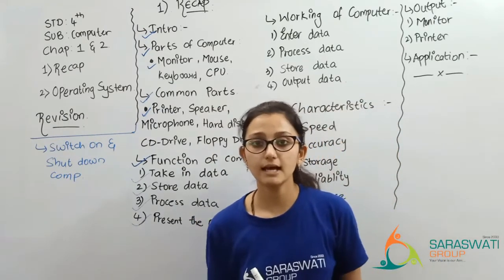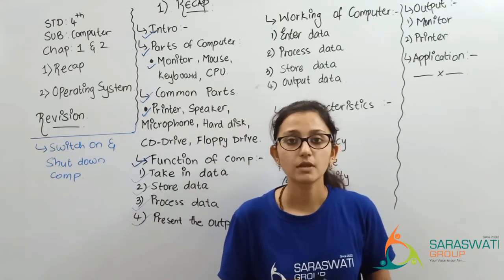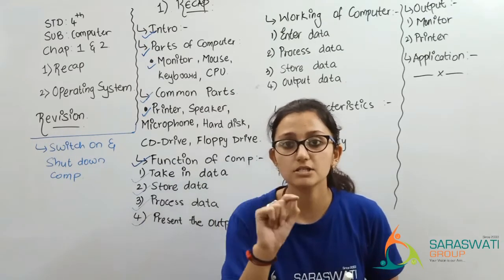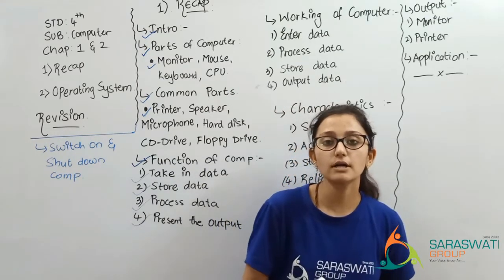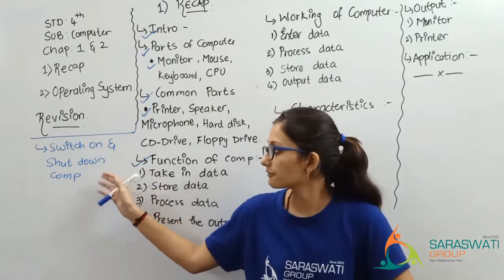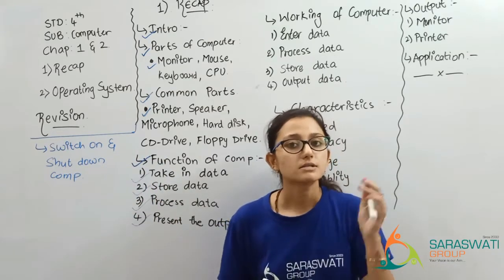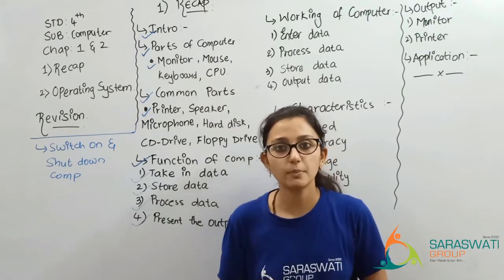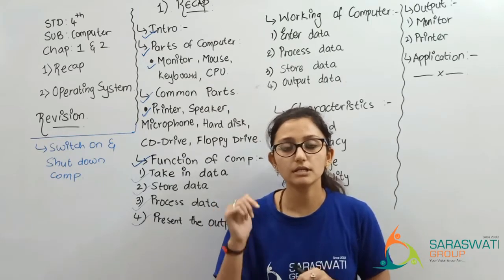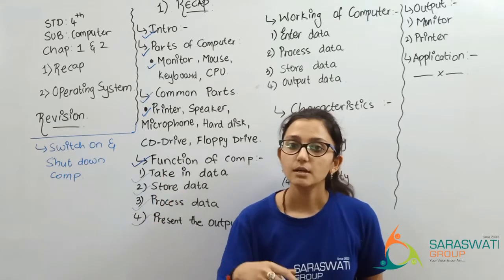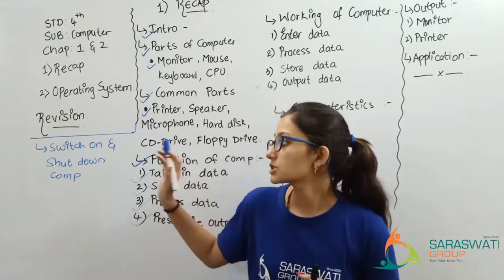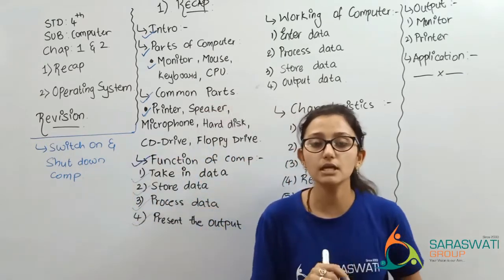To switch on the computer: first, switch on the power supply; then switch on the monitor screen; then switch on the CPU — the CPU has a power-on button. So the computer will switch on. To shut down: go to the Start button, click on the Shut Down option, and then switch off the monitor screen.